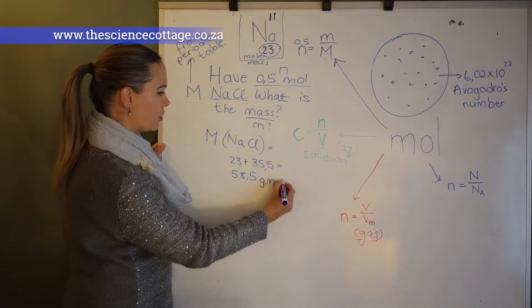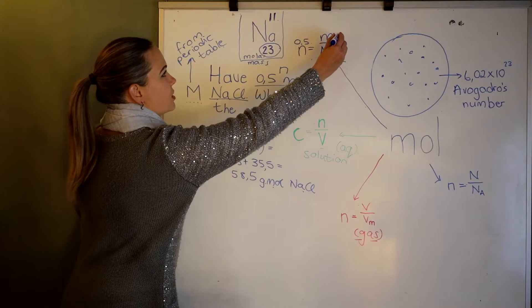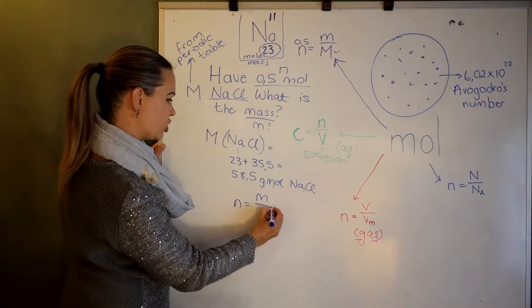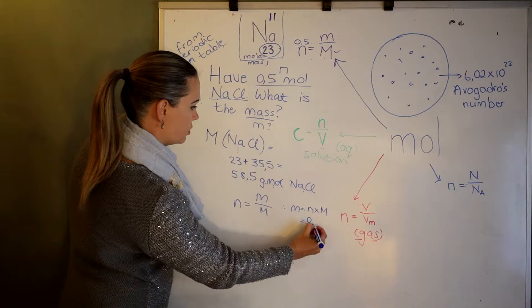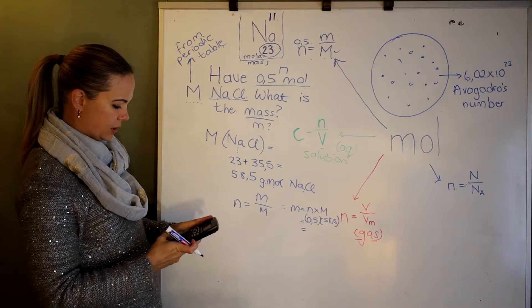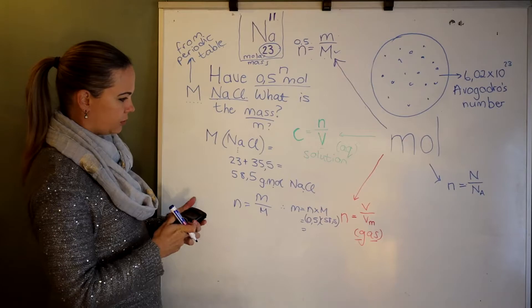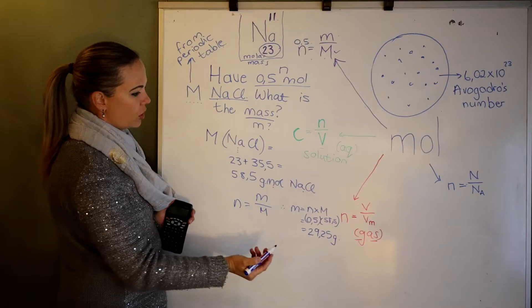Now we've got that. We want the mass, so we use the equation and calculate. If you have half a mole of sodium chloride, the mass on a scale will be 29.25 grams of sodium chloride.